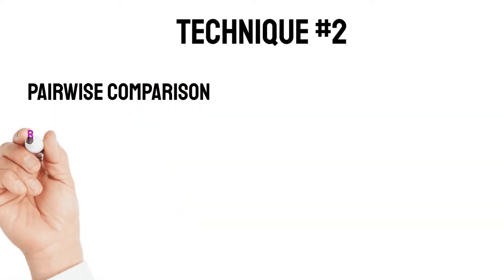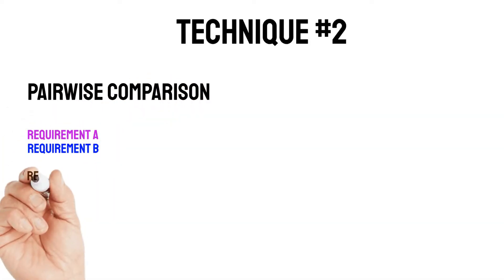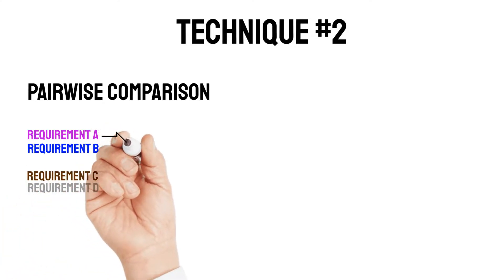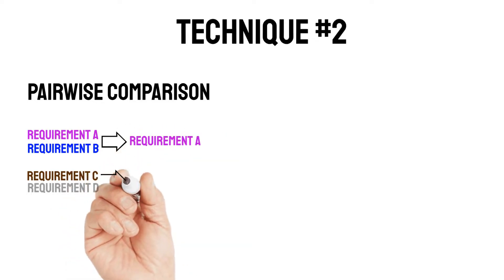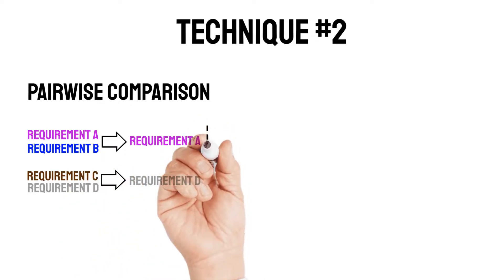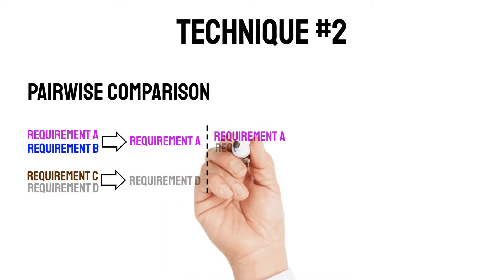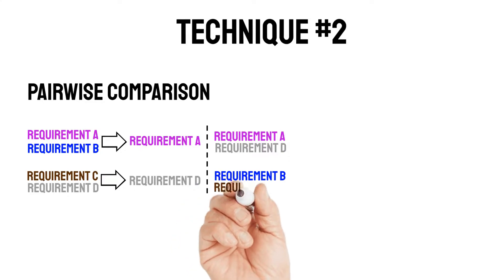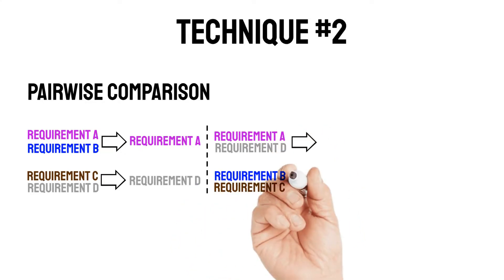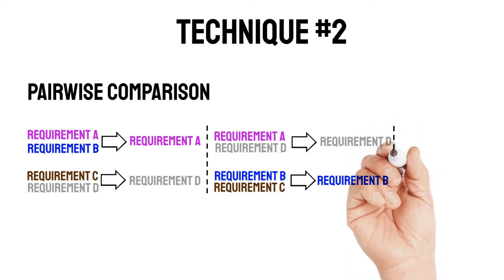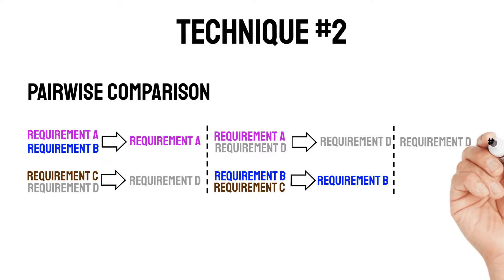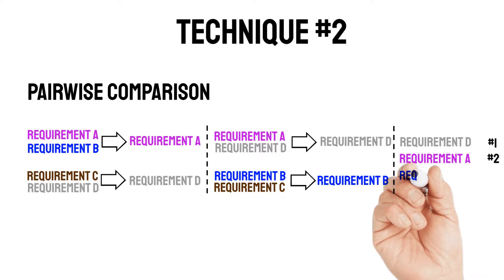After that easy technique, let me show you technique number two: the Pairwise Comparison. Let's imagine we have requirements A, B, C, and D, and we group them in pairs. Requirement A and D is one pair; requirement C and D is another. We compare which is more important within each pair. The business stakeholders say requirement A wins the first group and requirement D wins the second. We then shuffle the winners and losers: A vs D and B vs C. Stakeholders agree D beats A and B wins its group. So requirement D is the most important, followed by A, then B, then C.